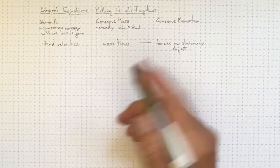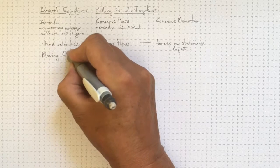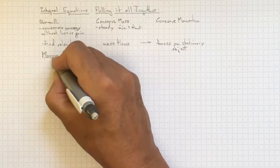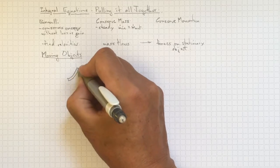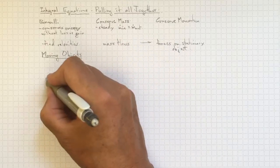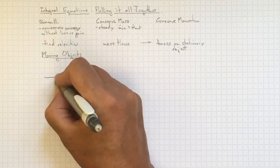Now, in most mechanical systems, we're interested in moving objects. So if I had a turbine blade, for example, that had a flow coming and hitting the turbine blade,